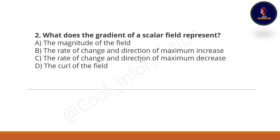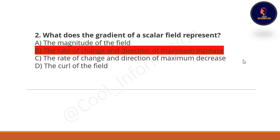Next question: what does the gradient of a scalar field represent? Option A: the magnitude of the field. Option B: the rate of change and direction of maximum increase. Option C: the rate of change and direction of maximum decrease. Option D: the curl of the field. The correct option is B — the rate of change and direction of maximum increase.